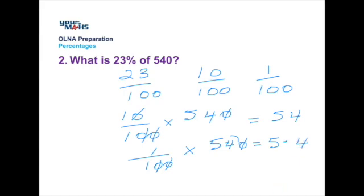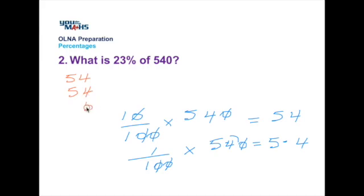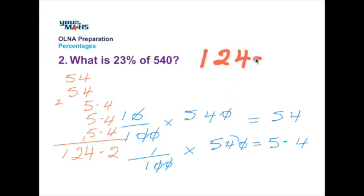Now we can use these parts to determine 23%. 54 is 10%. Another 54 makes 20%. Then 5.4 is 21%. Another 5.4 is 22%. And a final 5.4 makes up 23%. Adding up the right hand column gives us 12, and then we carry the 1. The next column, 4 plus 4 is 8, plus 5 is 13, then 5 is 18, and 5 is 23, plus the 1 makes 24. So we put a 4, carry the 2. 5 and 5 is 10, plus the 2 makes 12. Make sure that you recall where the decimal point is and all the units are lined up correctly. So our final percentage is 124.2. And we achieve that by working out 10% and 1% of the amount and then putting the pieces together to get 23%.